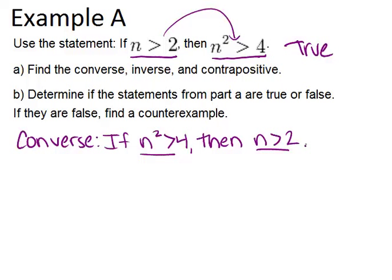If n squared is greater than 4, then n is greater than 2. This is not necessarily true, because of negative numbers. For example, if n equals negative 3, then negative 3 squared is 9 — because a negative times a negative is a positive — and 9 is greater than 4, so the hypothesis is satisfied. But negative 3 is not greater than 2, so that is a counterexample. Just because a statement is true doesn't mean that its converse will also be true.